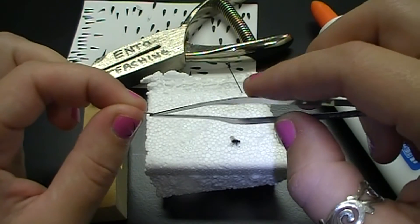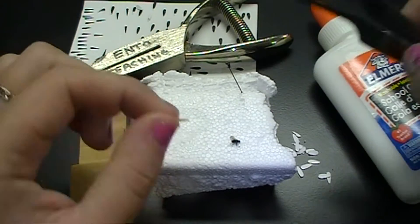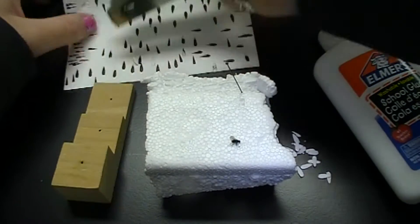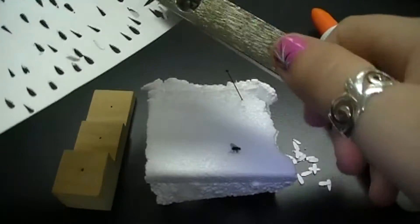You can punch these out of cardstock or index cards using these little hole punchers. Bioquip sells them for about $30, but you could probably find something similar at Michael's for cheaper.